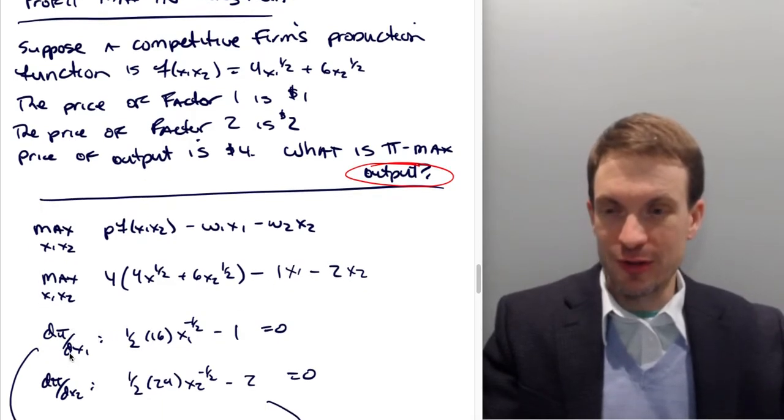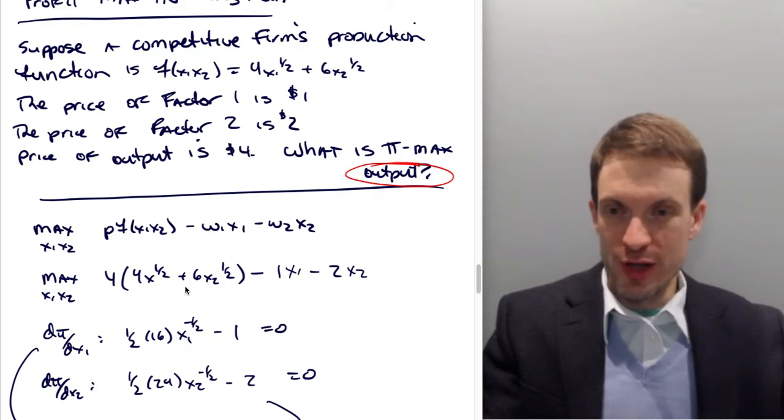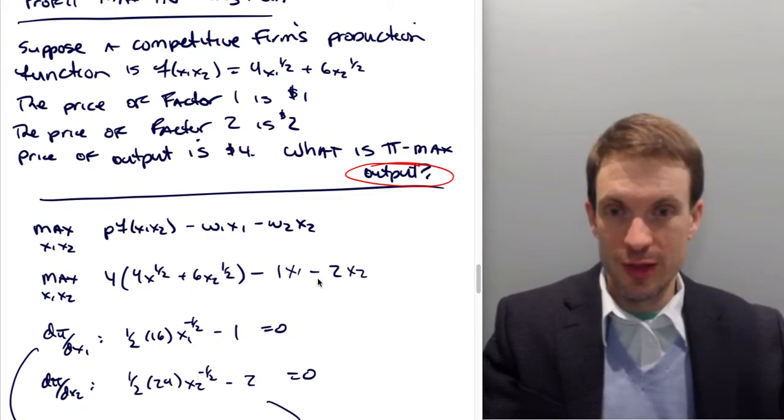Taking partials with respect to each choice variable, dπ/dx1 is going to be one half, 16, x1 to the minus one half, minus 1, equals 0. Because 4 times 4 is 16, bring down this half, it's going to be one half times 16, and then reduce the power by 1. And then over here we're going to have one half, 24, x2 to the minus one half, minus 2. Because 4 times 6 is 24, one half times 24, reduce the power by 1, and then we have minus 2.